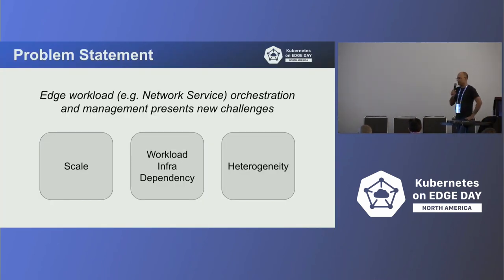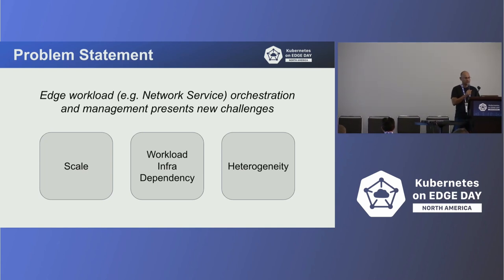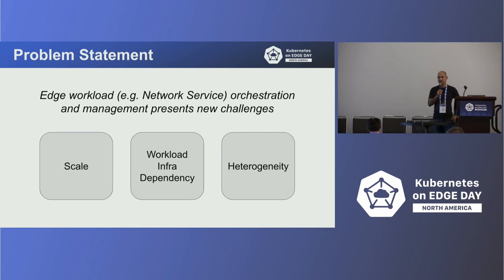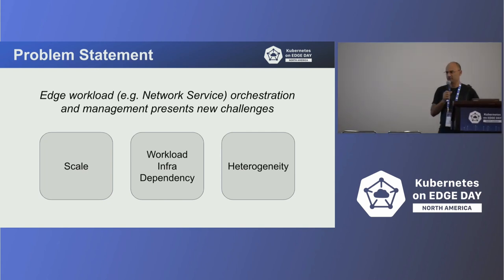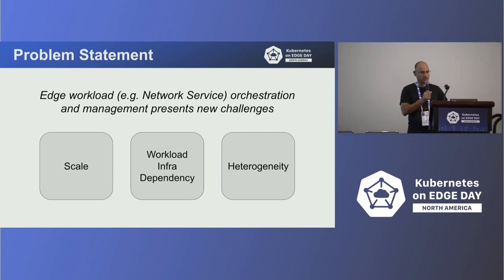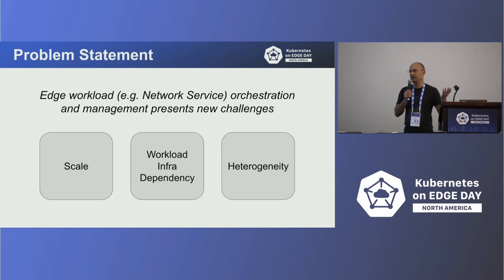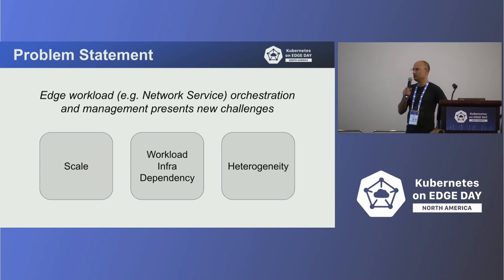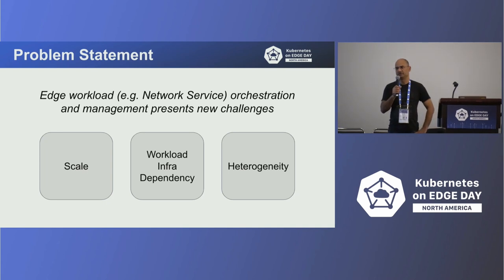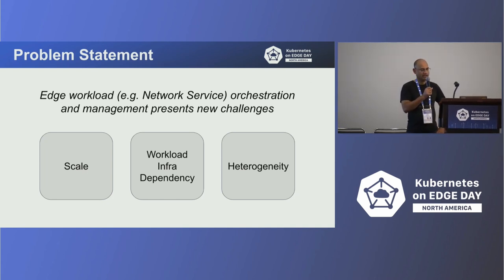First, the problem statement. What are the new problems that come up when you try to do edge workloads — for example, network service orchestration and management? In my view, three things come up. First is scale. The edge can be massive in comparison to the cloud, in terms of tens of thousands of locations and hundreds of thousands of devices.